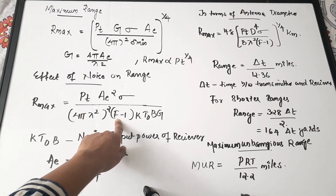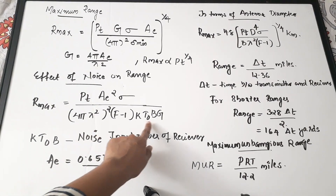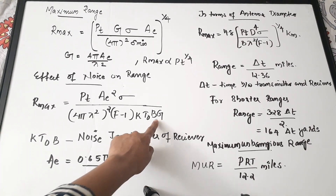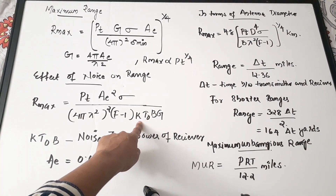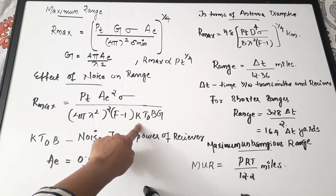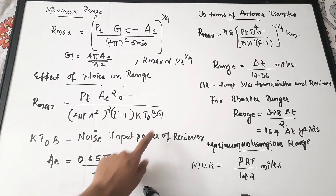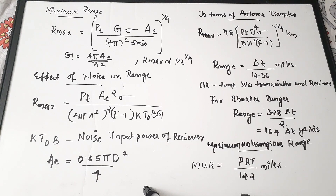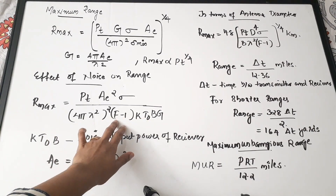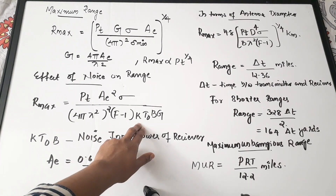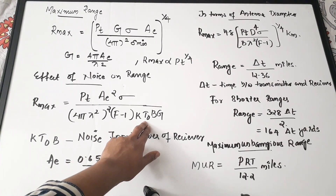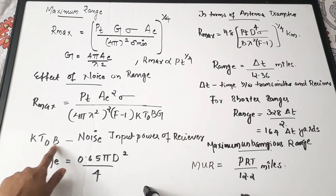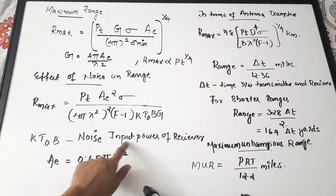In the noise range equation, F is the noise figure of the receiver, T0 is the standard ambient temperature which is 290 Kelvin, B is the bandwidth, and k is Boltzmann's constant. G is the gate. The three terms k, T0, and B together contribute the noise input power of the receiver.